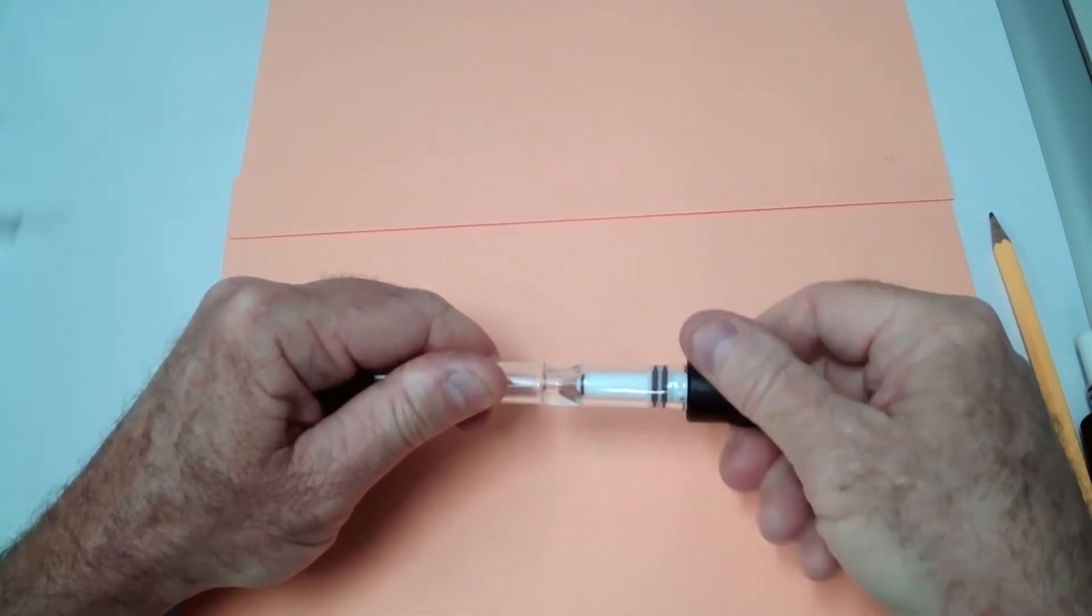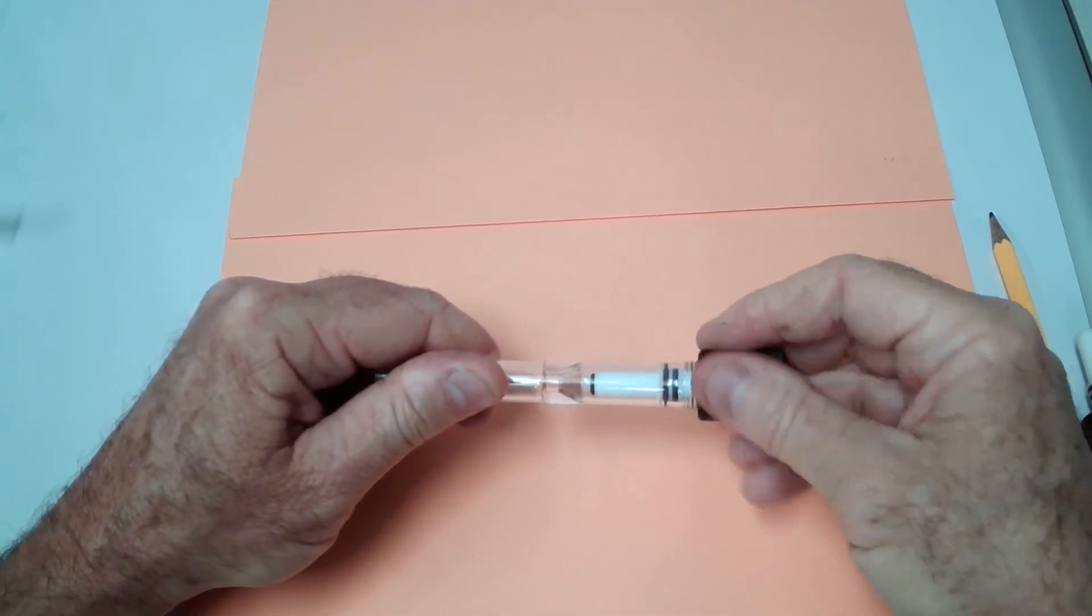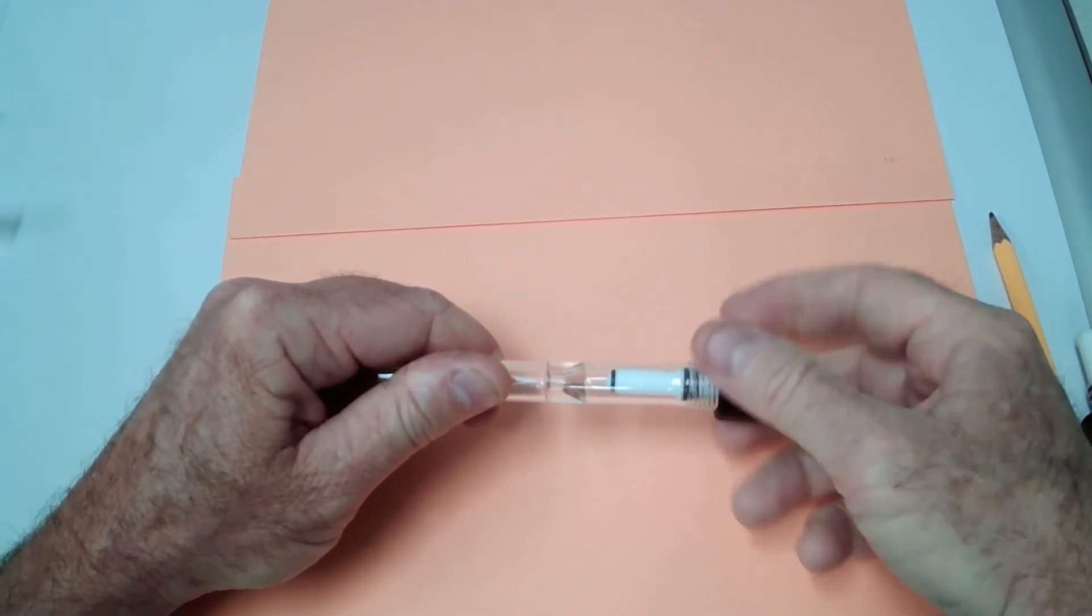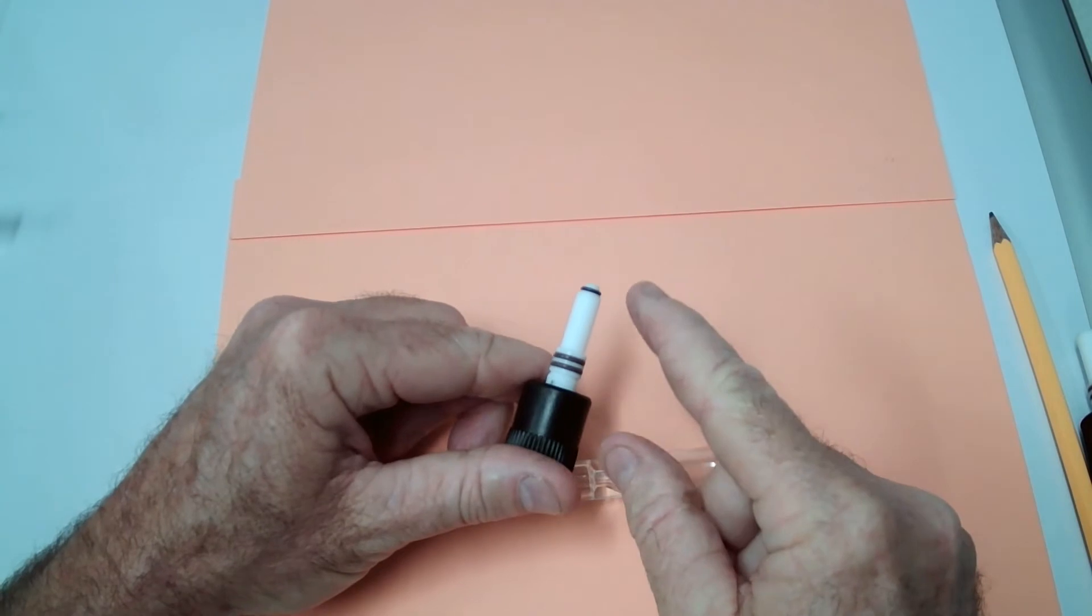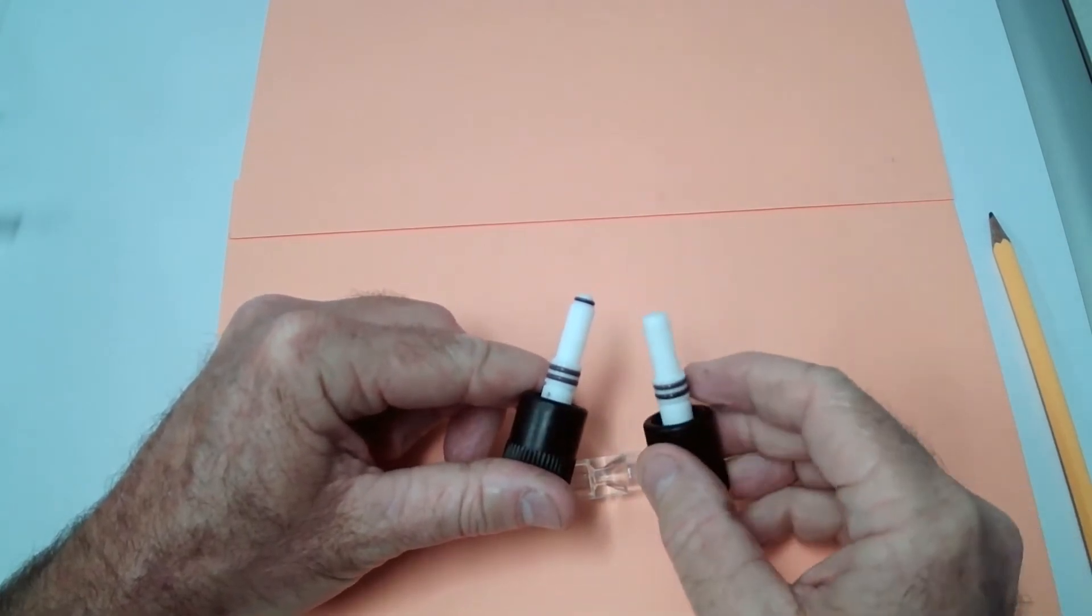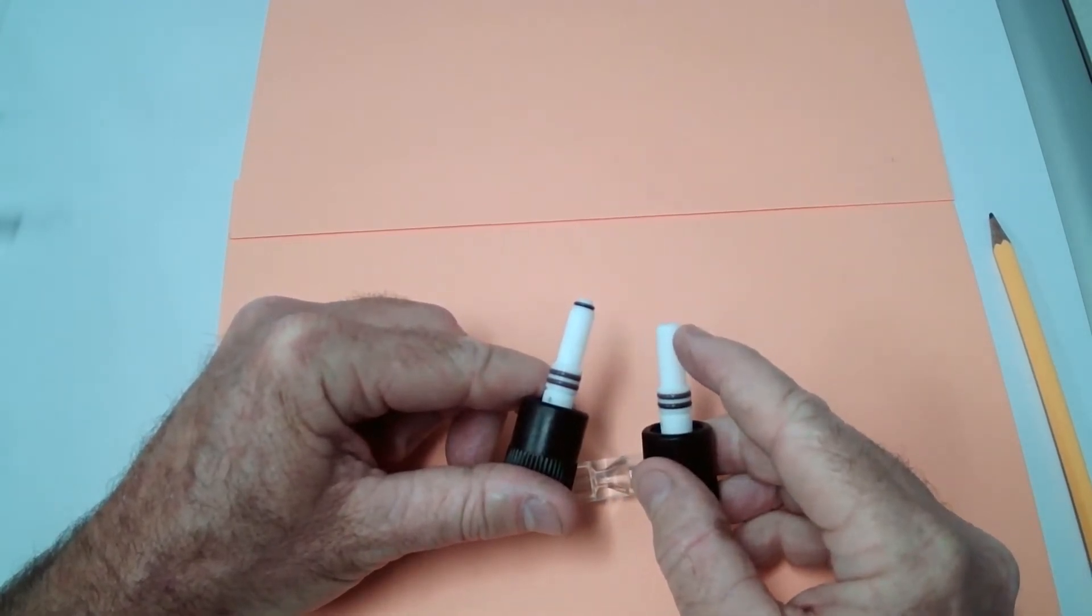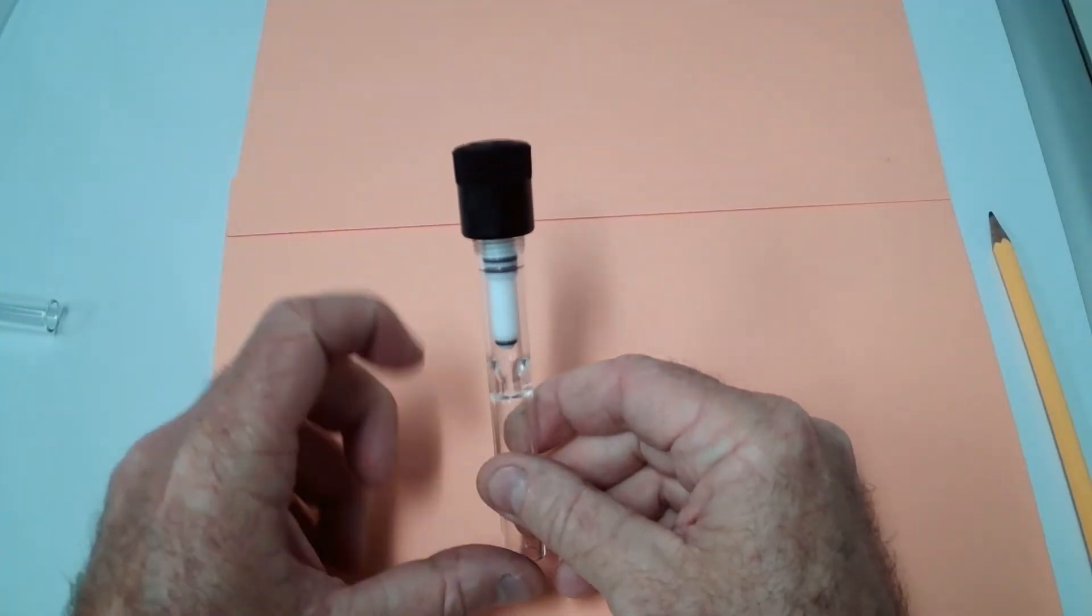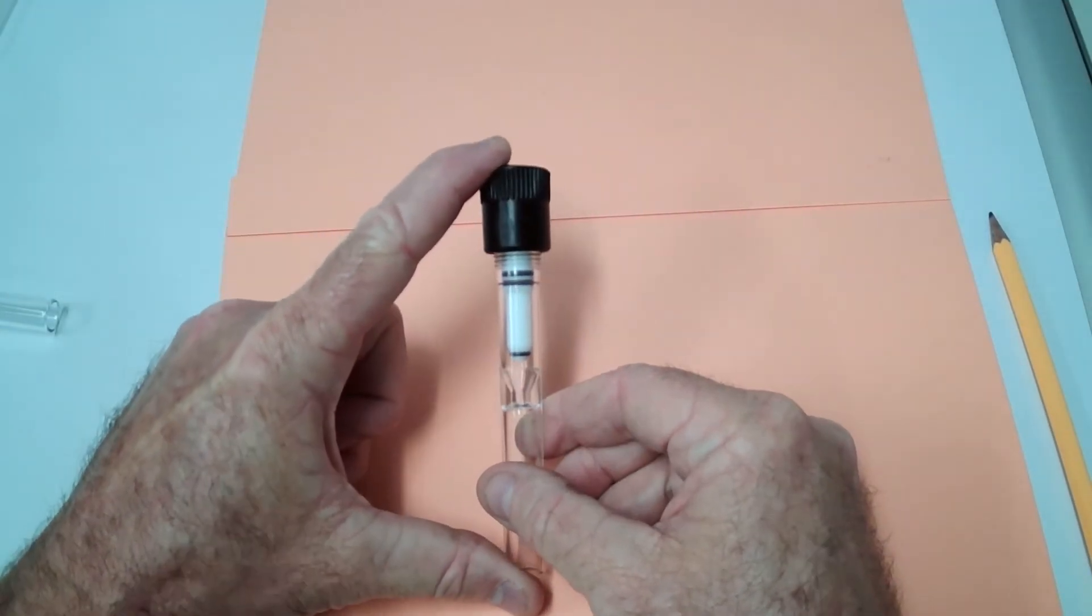Another type of valve plug that is used is one that does not have the Viton tip or the O-ring. It has a plain Teflon tip. This is the basic portion of the valve.